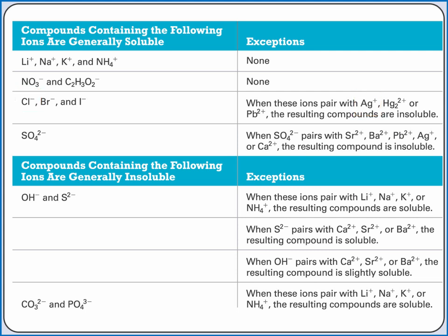In the bottom of the table, ionic compounds containing the listed ions are generally insoluble, with the exceptions listing when the ionic compound is soluble. For example, sulfide salts are generally insoluble, but calcium sulfide is soluble because calcium is one of sulfide's exceptions.